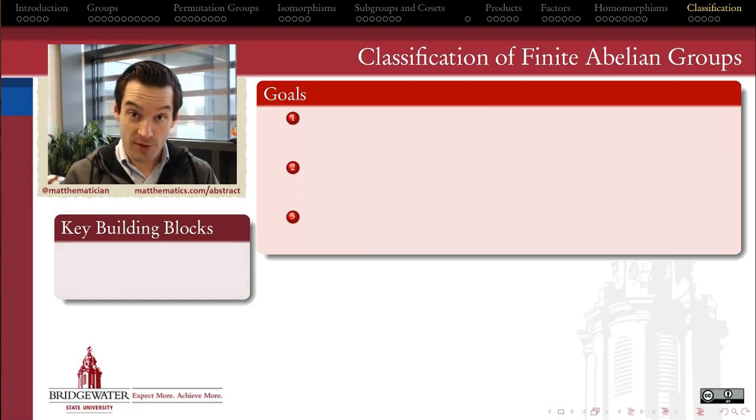The finite abelian groups are something that we now possess the toolwork to completely classify. If you give me a finite abelian group, I can tell you exactly all the possibilities for the structure of that group in a finite list of options. That's our goal for this last set of videos for this semester: how do we classify the finite abelian groups?